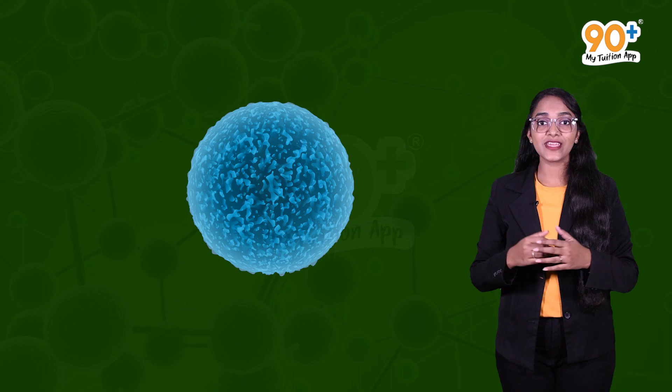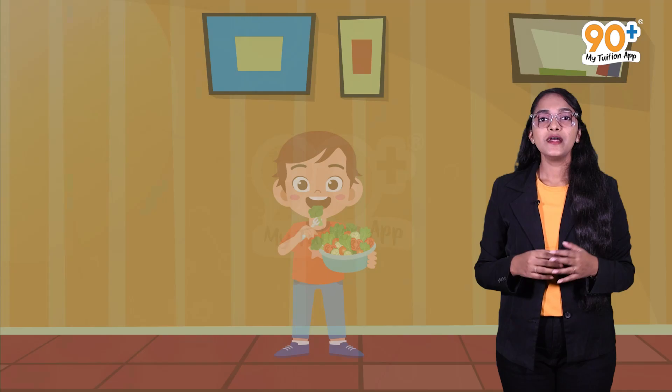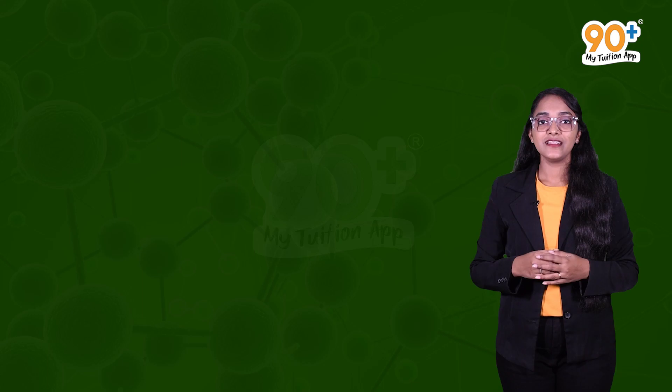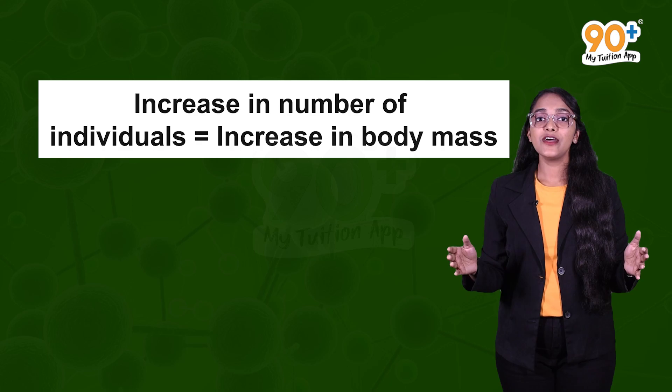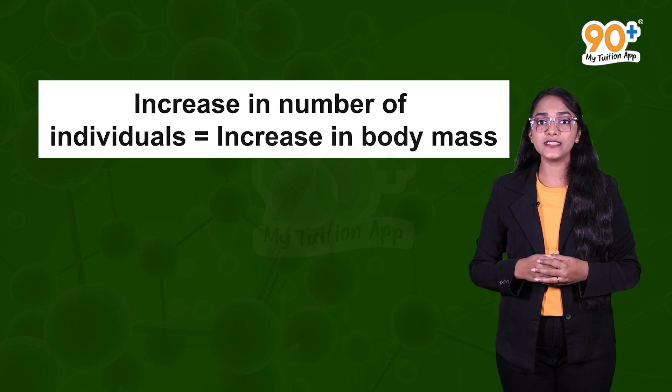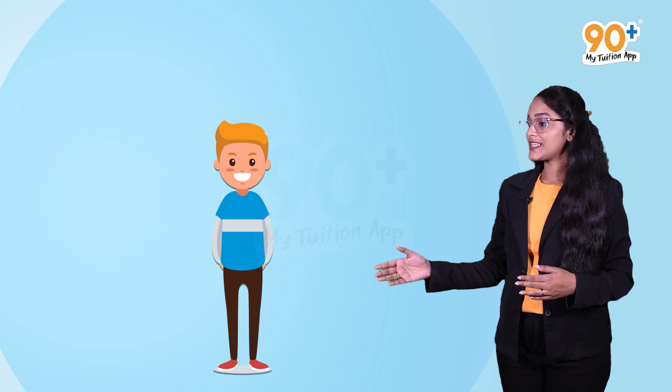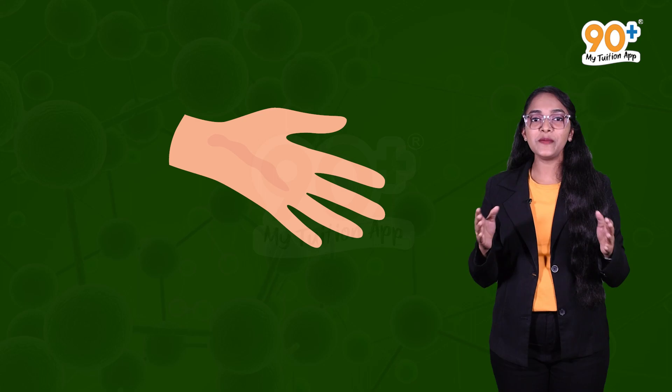Definitely not. Unicellular organisms grow by cell division, but each cell is an individual. Multicellular organisms grow by increase in body mass. Increase in number of individuals and increase in body mass both hold the same idea of growth. But animals can only grow up to a certain age, whereas in plants, cell division happens throughout their entire lifespan. And if we get an injury, cell division occurs to replace the lost cells.